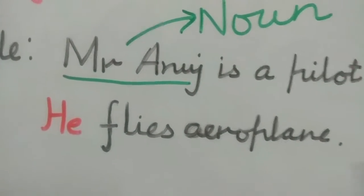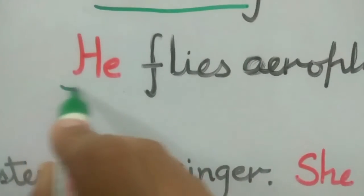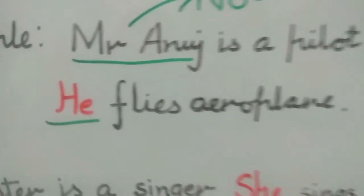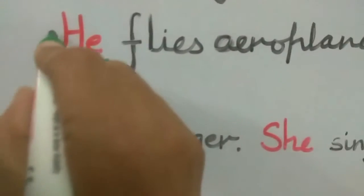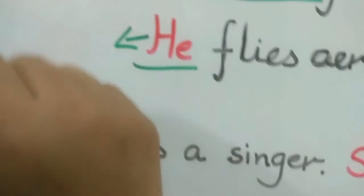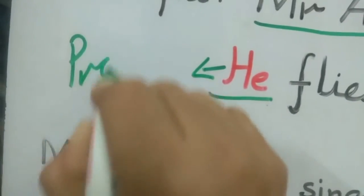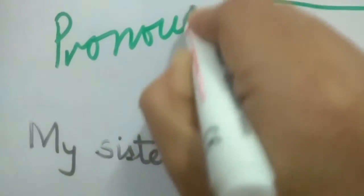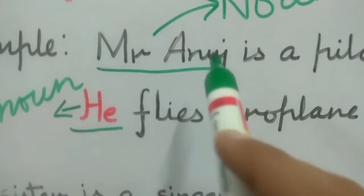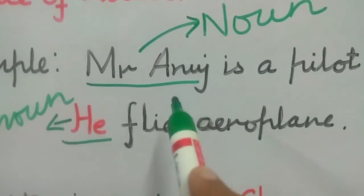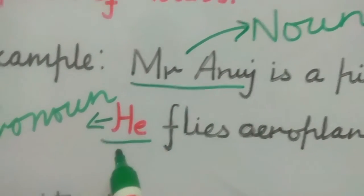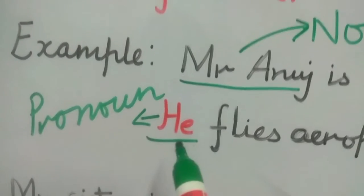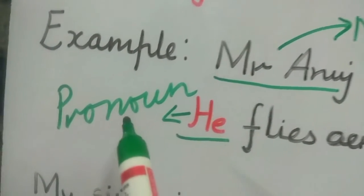When I am talking again about Mr. Anuj, I say 'he flies' — I do not say 'Mr. Anuj flies aeroplane.' So the word 'he' is a pronoun. At the place of Mr. Anuj, it is written 'he', so 'he' is the pronoun.